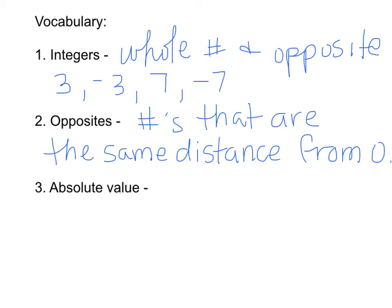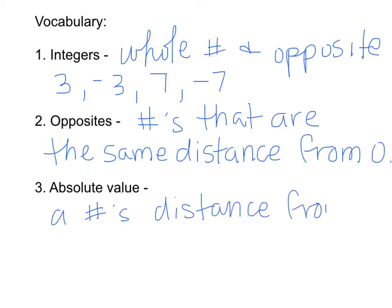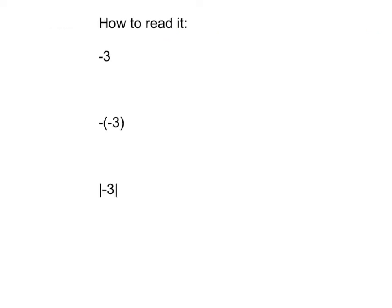The absolute value of a number is a number's distance from 0. Let's look at these examples on a number line. First, let's look at how to read these symbols.